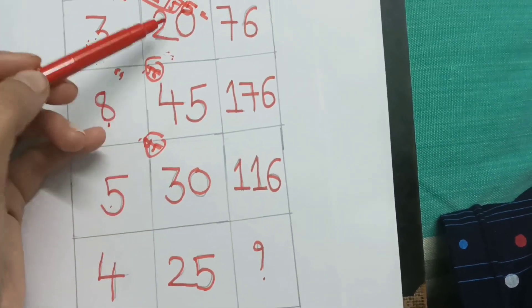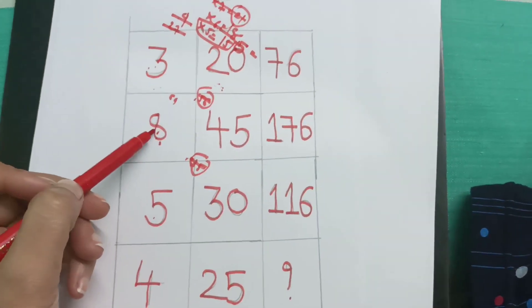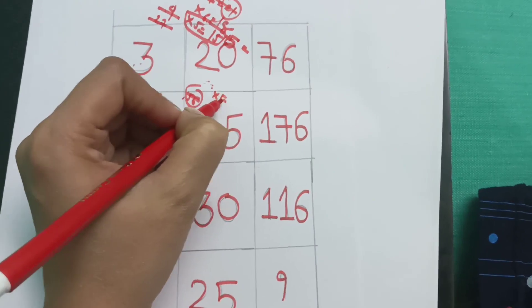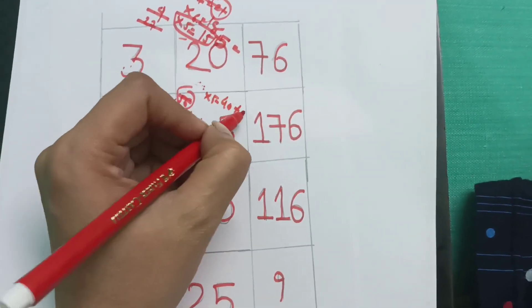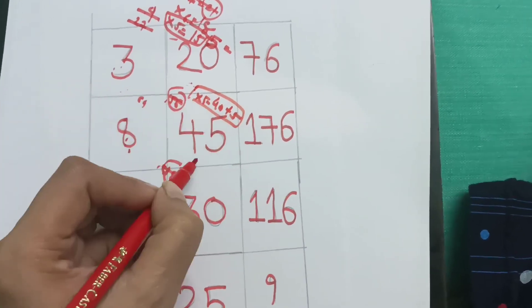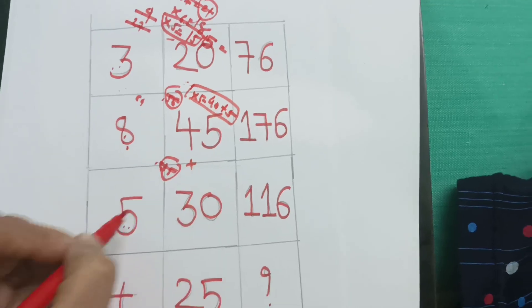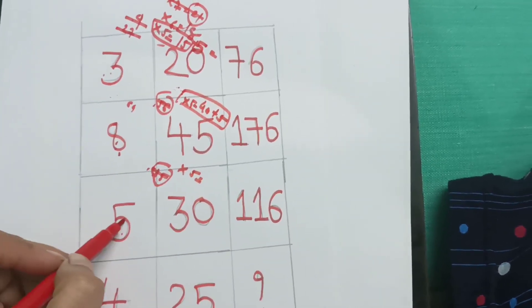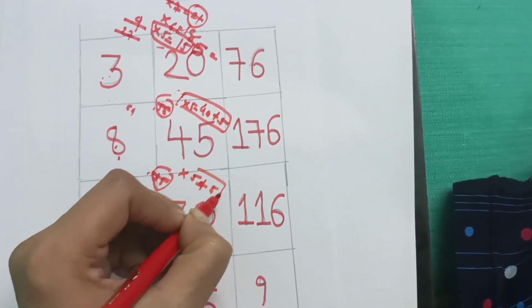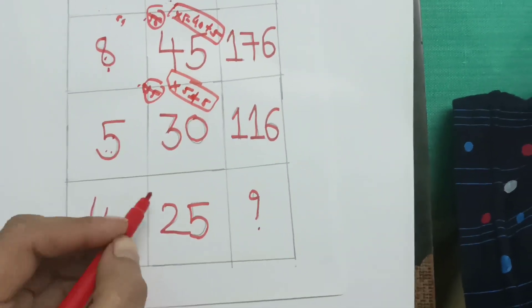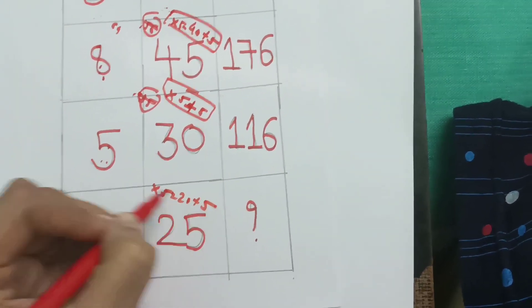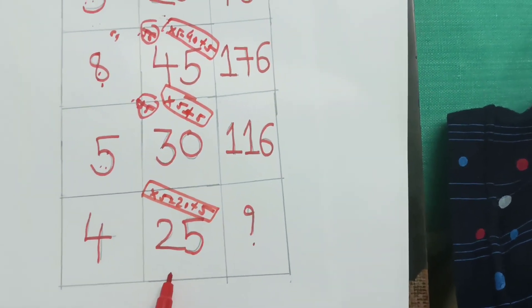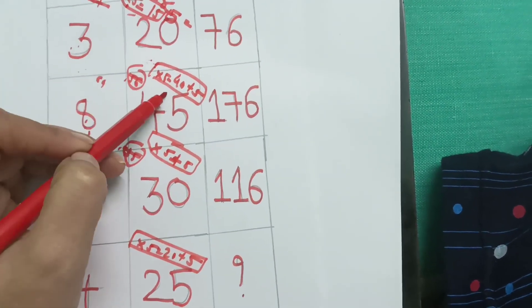Eight fives are 40, and if we add 5 we get 45. Six fives are 30, and four fives are 20 plus 5 gives us 25. So the pattern is: multiply by 5 and add 5. Multiply by 5 and add 5 for each term.